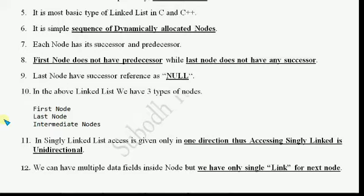Eleventh point: in singly linked list, access is given only in one direction. Thus, access in singly linked list is unidirectional. Because we can only do forward access — if we know the first node's address, we go second, third, fourth. So singly linked list is unidirectional.